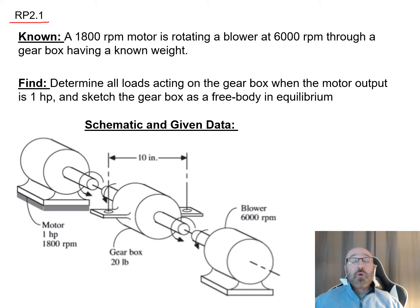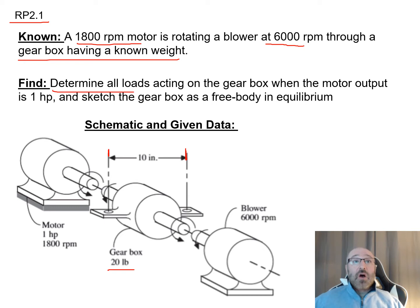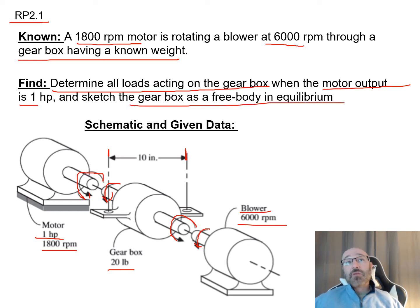Now let's look at example problem 2.1. We have an 1800 RPM motor rotating a blower at 6000 RPM through a gearbox weighing 20 pounds. From the diagram, the gearbox is mounted with 10 inches between the two mounting tabs. We need to find all loads acting on the gearbox when the motor output is 1 horsepower, and sketch the gearbox as a free body in equilibrium. The motor, gearbox, and blower all rotate counterclockwise.